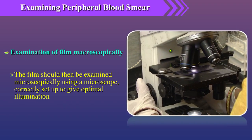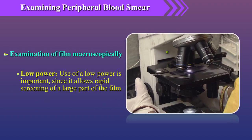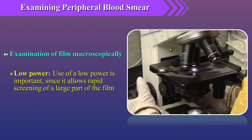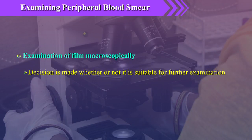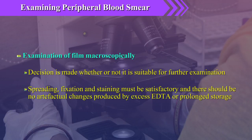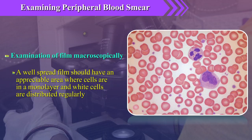The film should then be examined microscopically using a microscope correctly set up to give optimal illumination. The use of low power is important since it allows rapid screening of a large part of the film. A decision is made whether or not it is suitable for further examination. Spreading, fixation, and staining must be satisfactory with no artifactual changes from excess EDTA or prolonged storage. A well-spread film should have an appreciable area where cells are in a monolayer, touching and not overlapping, and white cells are distributed regularly.